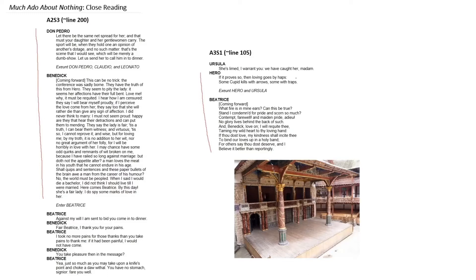Hero even has this nice rhyming couplet — 'haps,' 'traps' — whilst Beatrice almost uses a Shakespearean sonnet. Shakespearean sonnets consist of 14 lines, where they have three quatrains and a finishing rhyming couplet.